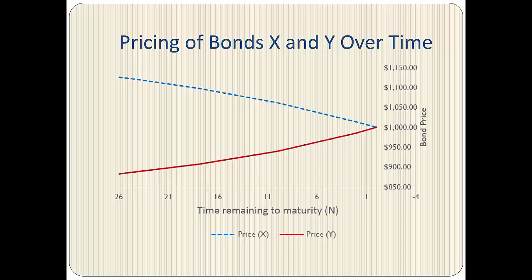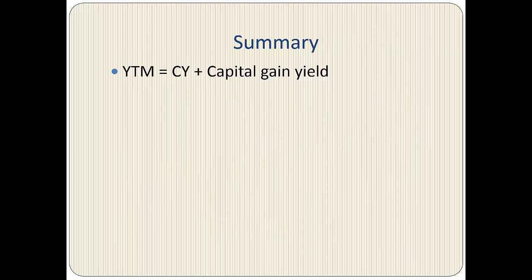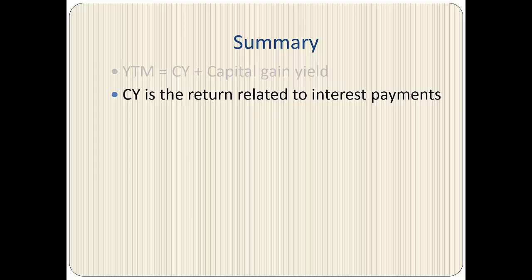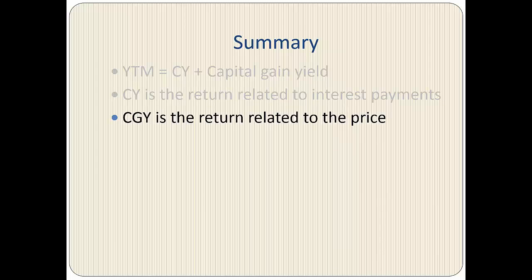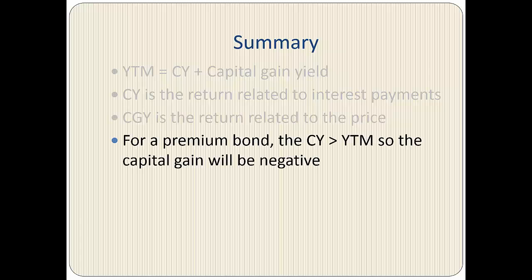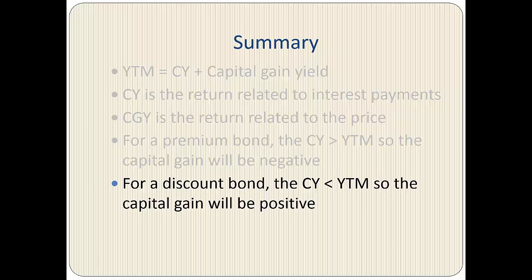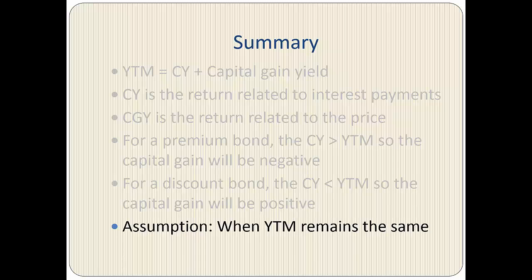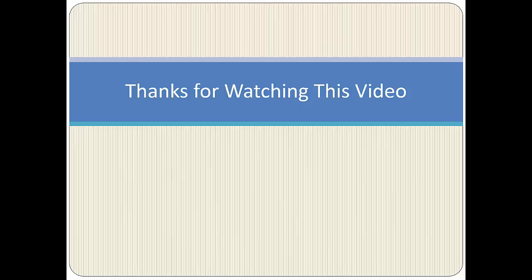In summary, yield to maturity equals current yield plus capital gains yield. Current yield is the return related to interest payments, while capital gains yield is the return related to price. For a premium bond, the current yield is greater than the yield to maturity, so the capital gain will be negative. For a discount bond, the current yield is lower than the yield to maturity, so the capital gain will be positive, assuming the yield to maturity remains the same. Thanks for watching — comments and suggestions are welcome.